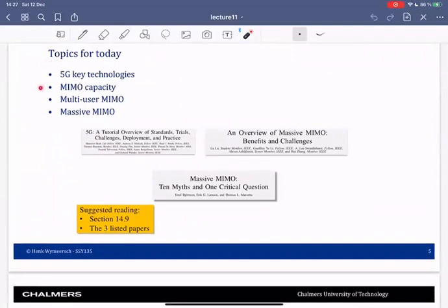Now let's switch to the topics for this lecture. We'll talk about the key technologies of 5G, spend one or two slides revisiting MIMO capacity, and then go into two major topics: multi-user MIMO and massive MIMO which is one of the 5G key technologies. The topics for today are not really covered in the book, they're more advanced topics. Even though you can read section 14.9 in the book, I recommend that you read these three papers on 5G. I think they provide a good introduction to this lecture.